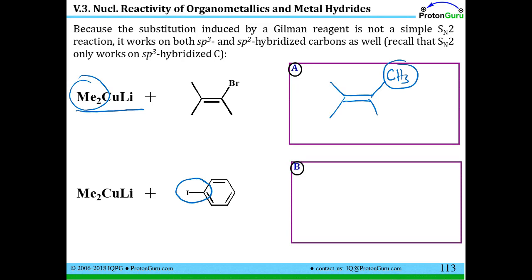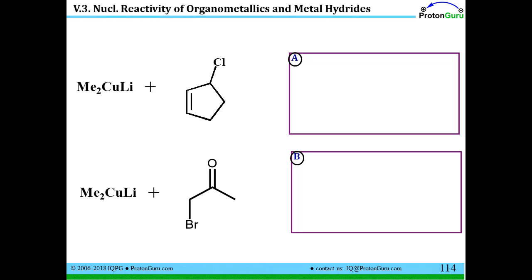So here's an iodine attached to benzene. And if I react this with a Gilman reagent, I will be able to get a methyl group attached to the benzene ring. It turns out the Gilman reagent is quite versatile.